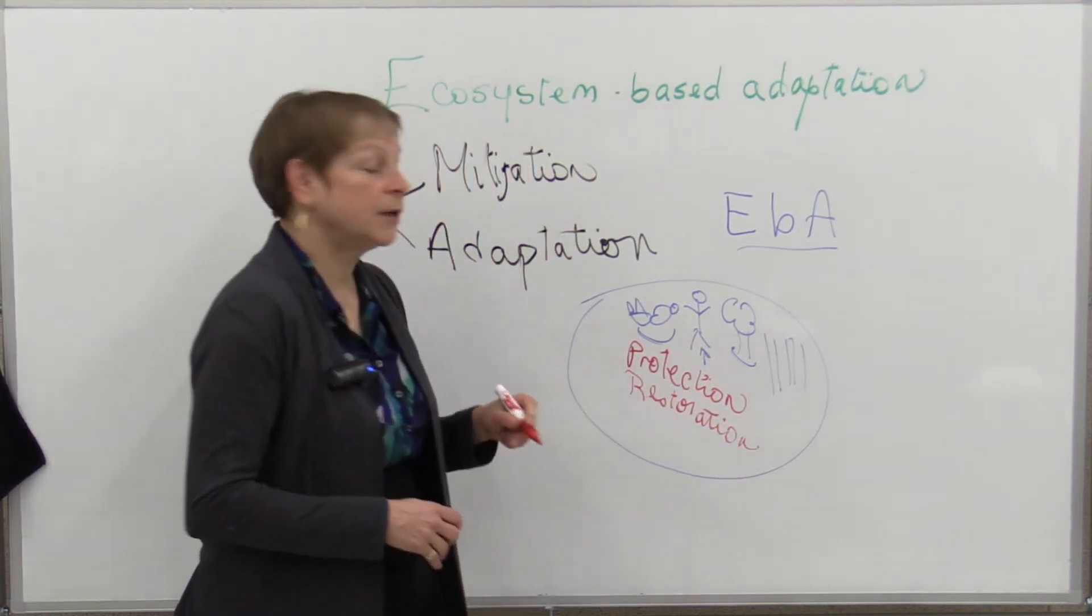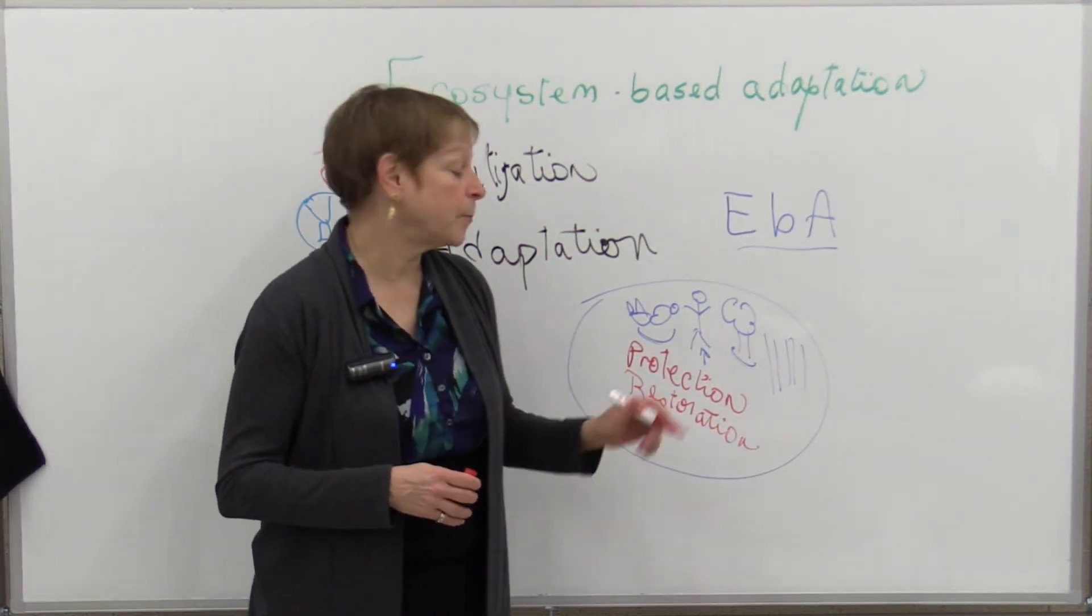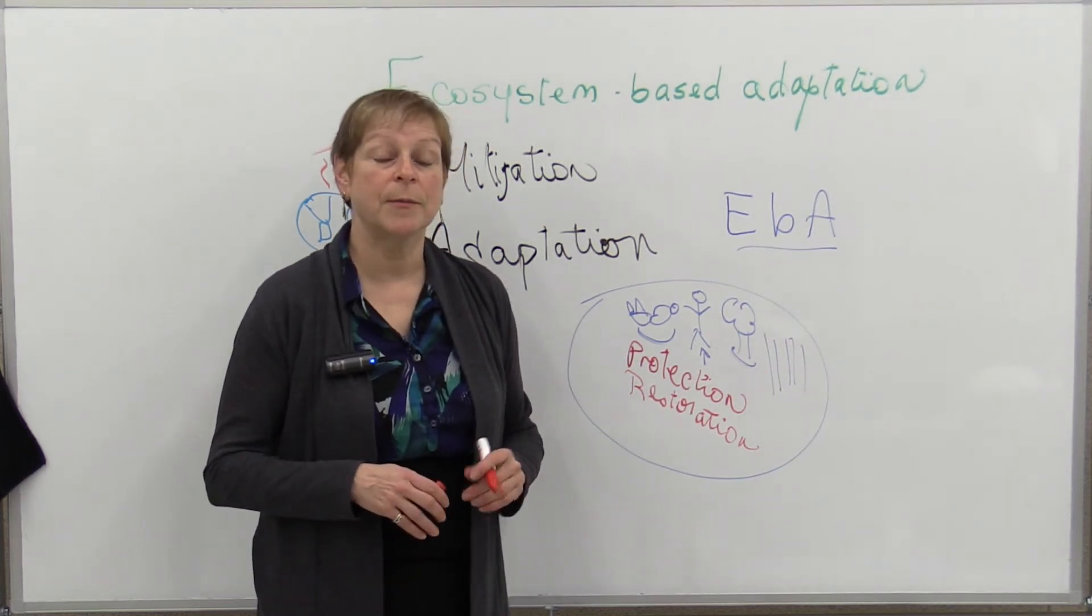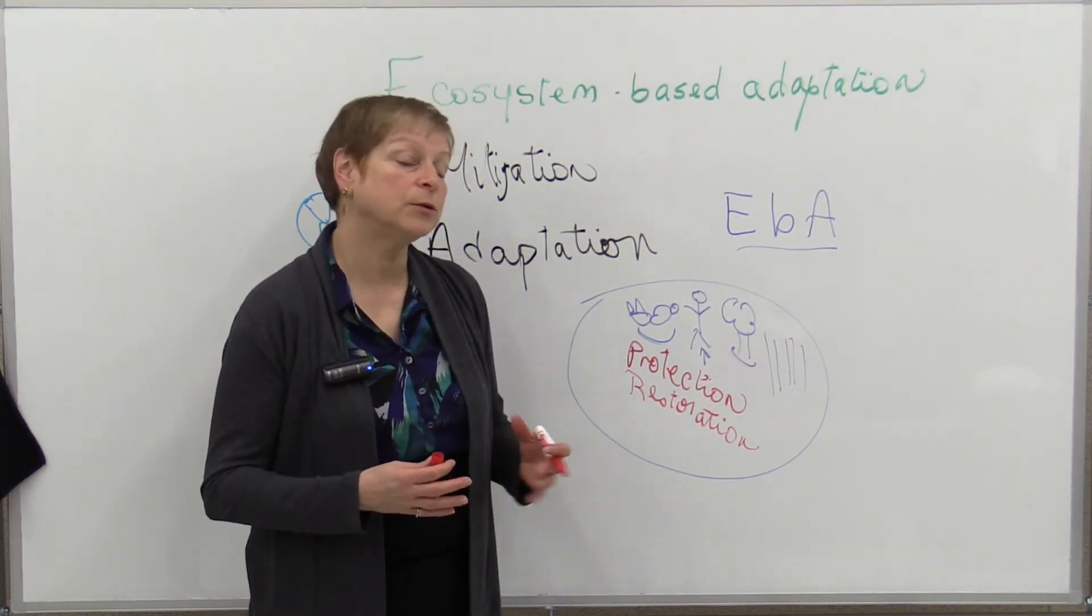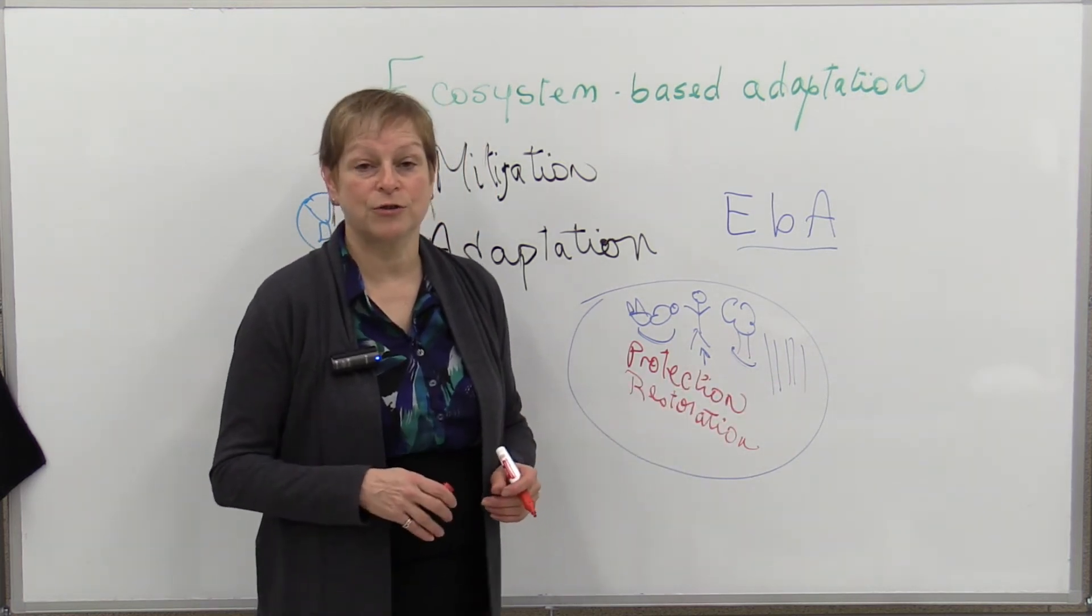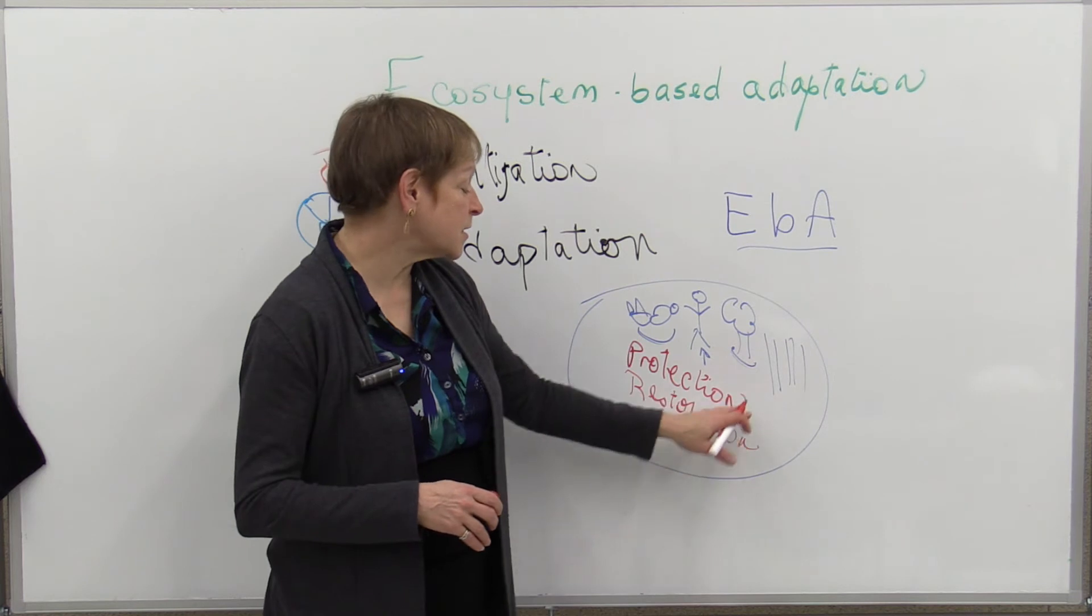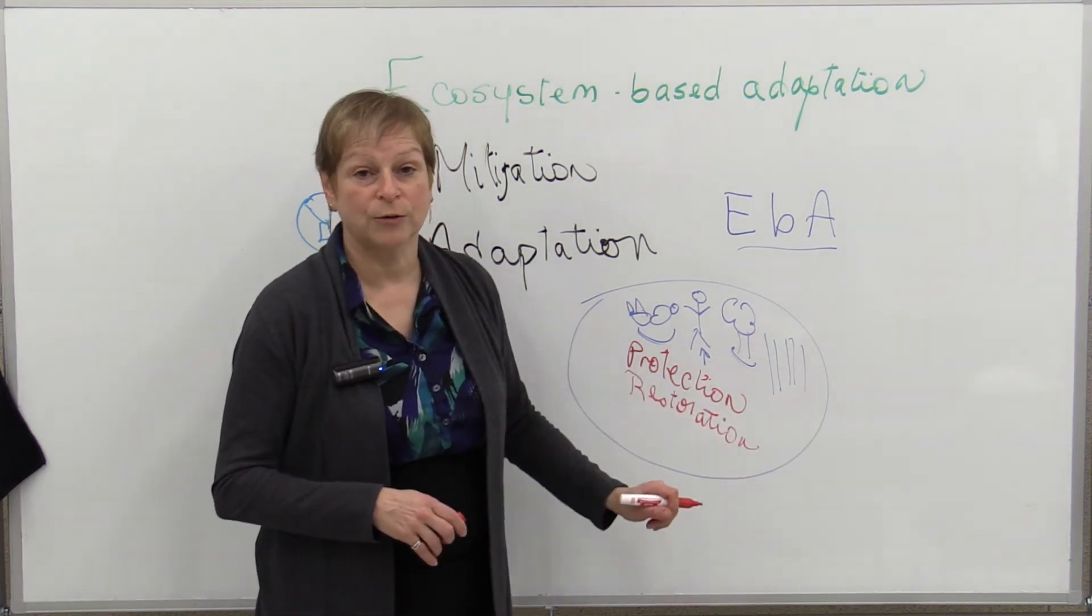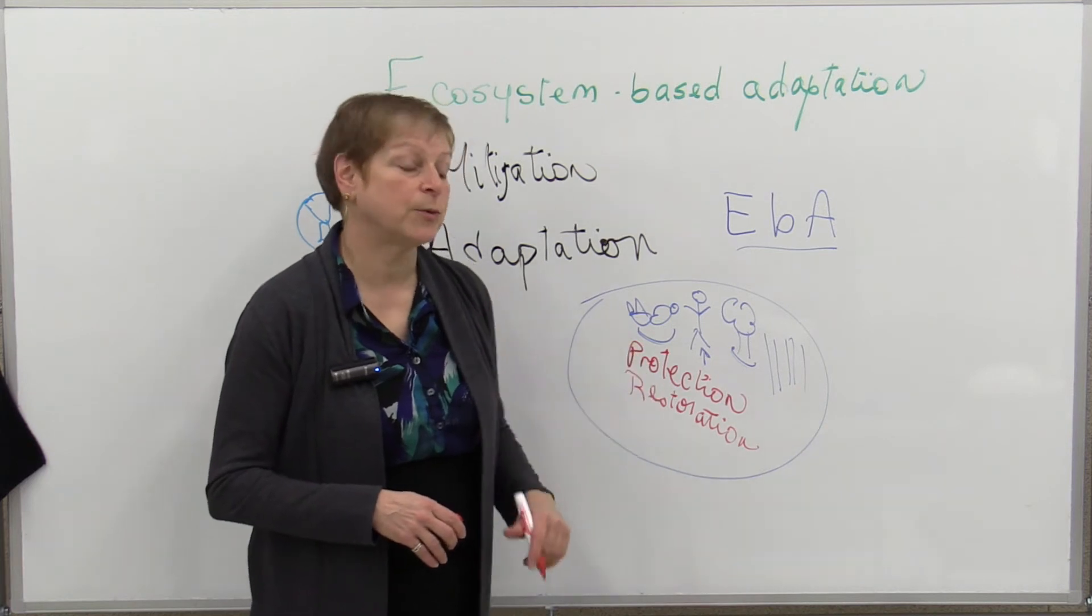So restoration can be of the natural ecosystem, but it can also be the human ecosystem. So the managed ecosystem that is restored to be able to be more capable of responding to the changes over time. So this is especially important when we look at forestry or agricultural systems, because they will need to adapt.